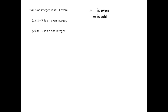Let's start by looking at statement 1 alone. We're told as a fact that m plus 3 is even. One possible case is that m plus 3 equals 6. In this case, m equals 3, and m is odd — the answer to the question is yes. Another possible case is that m plus 3 equals 8. In that case, m is a different value, but it's still odd, and the answer is still yes.